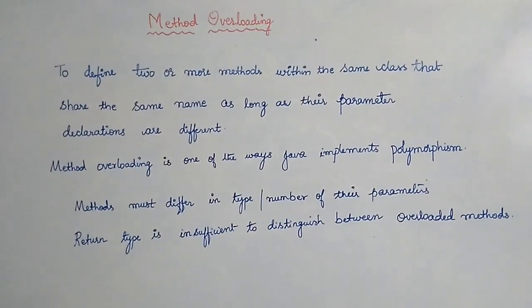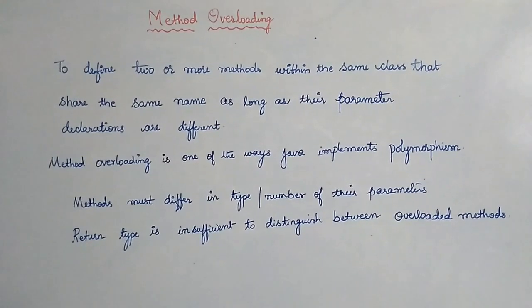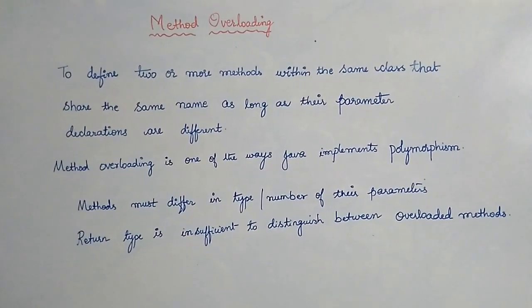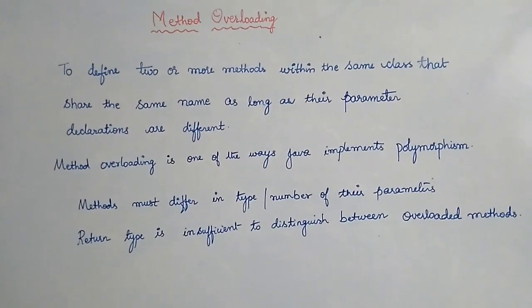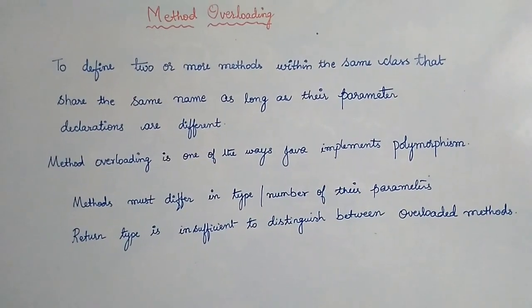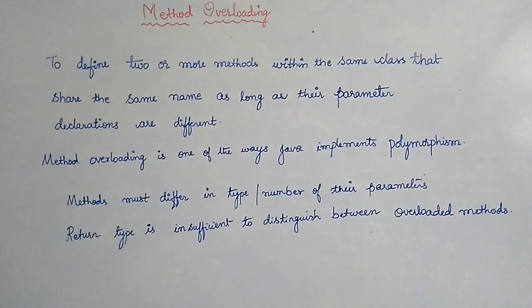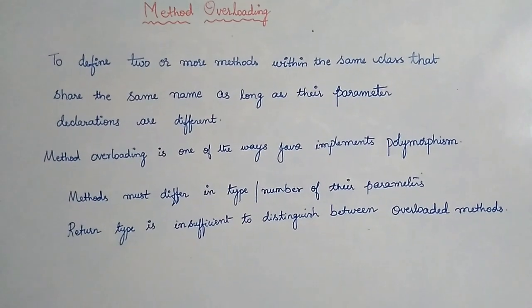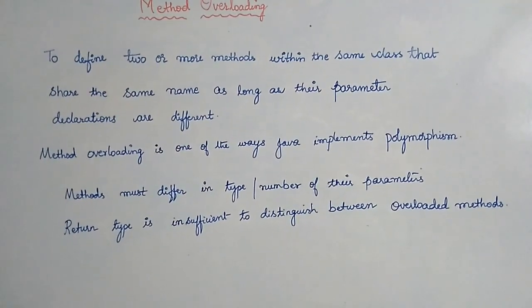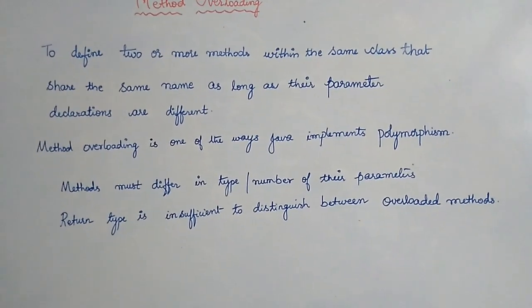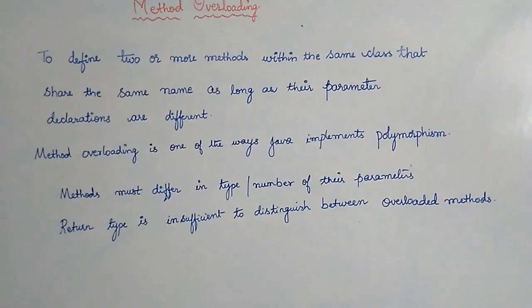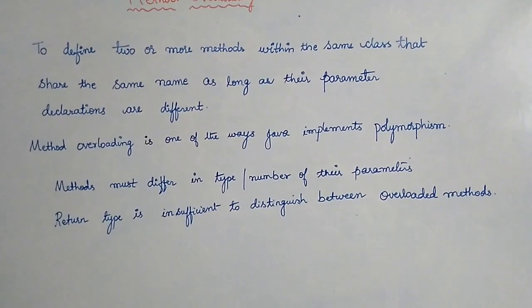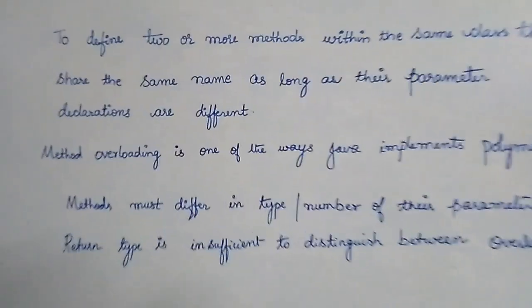Hello friends, welcome back to another session of core Java tutorials. Today's topic is method overloading. Method overloading is similar to constructor overloading. To define two or more methods within the same class that share the same name, as long as their parameter declarations are different — that is called method overloading. Overloading is one of the ways Java implements polymorphism.